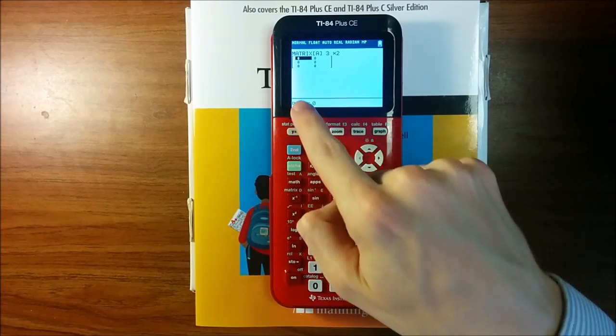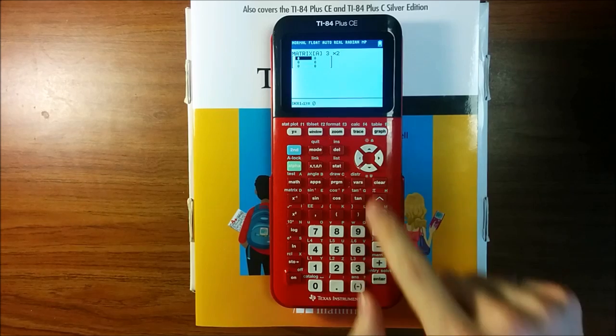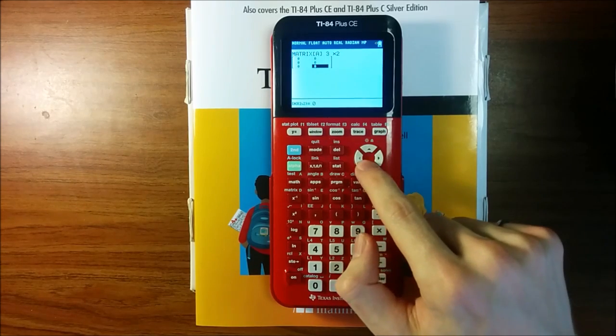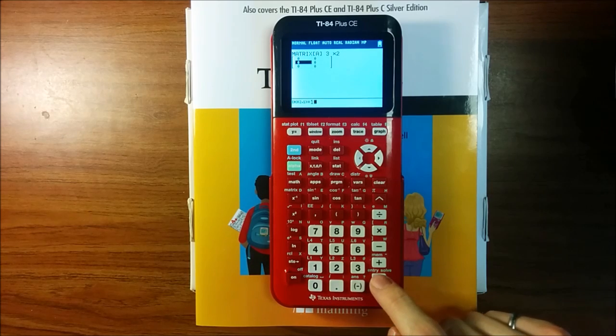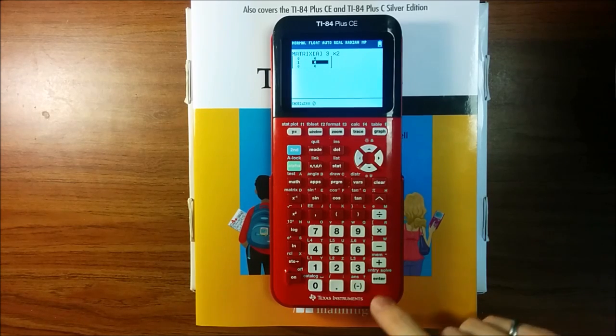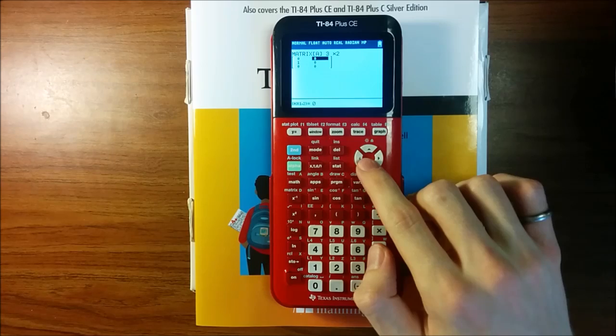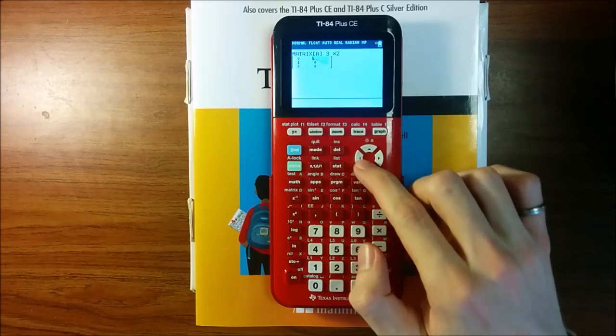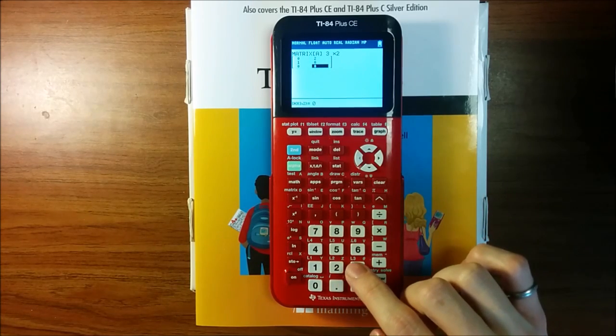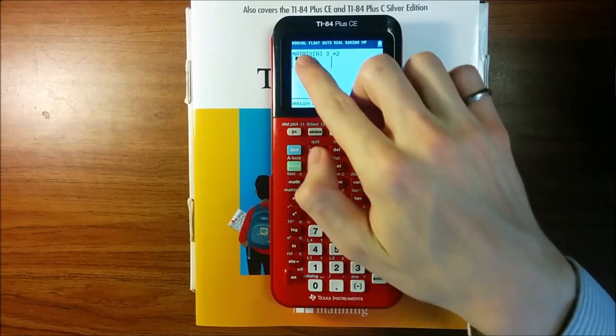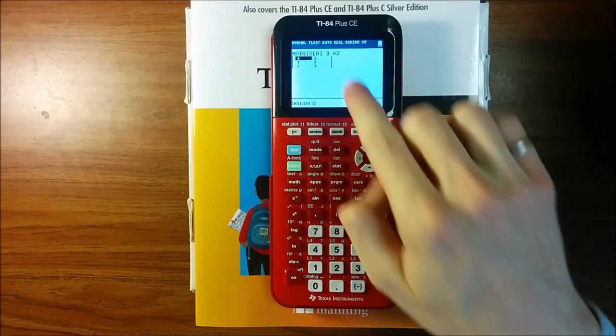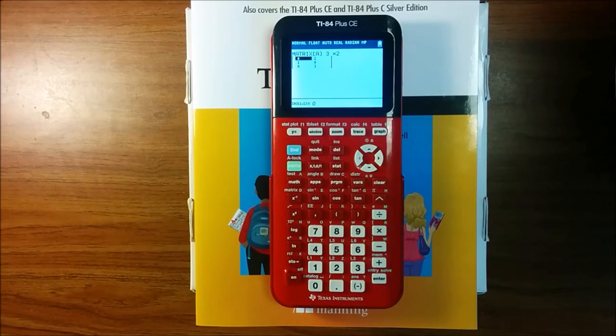And in the matrix editor, I can edit the values of each of these elements. Let's say I set the second row, first column, to one. I'll set the first row, second column, to two. And I'll set the third row, second column, to three. Now the items in my matrix are zero, one, and zero in the first column, and two, zero, and three in the second column.